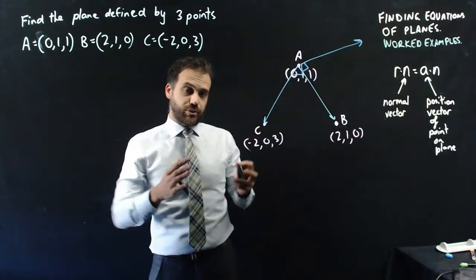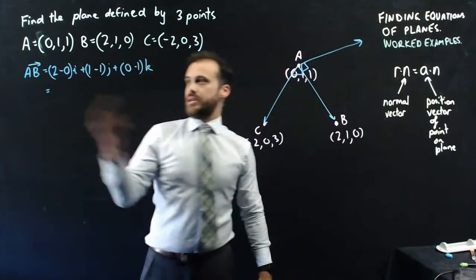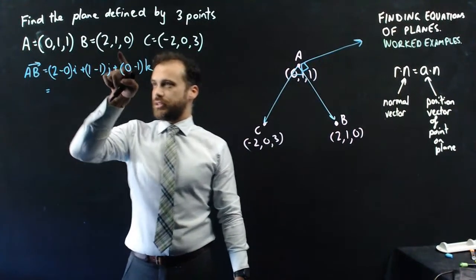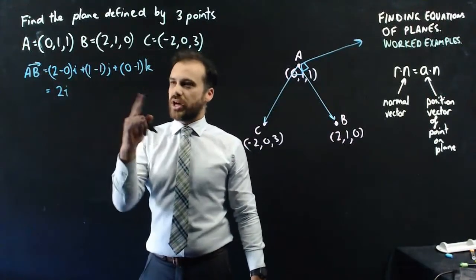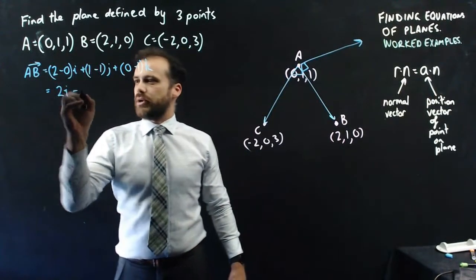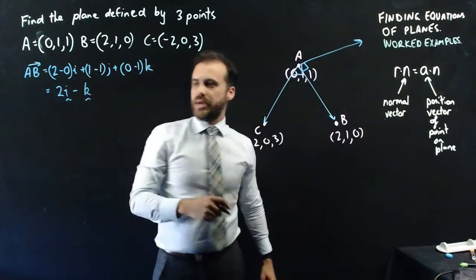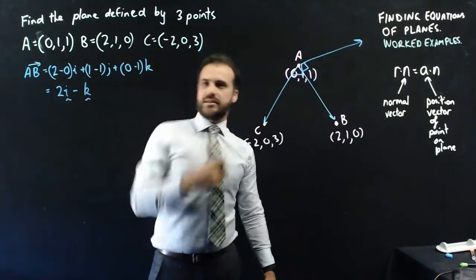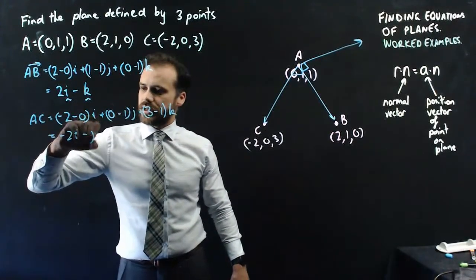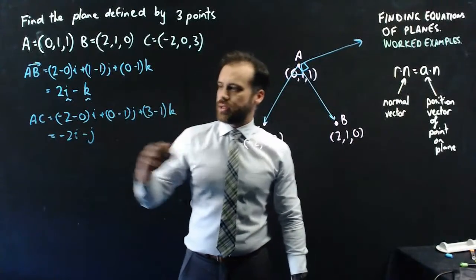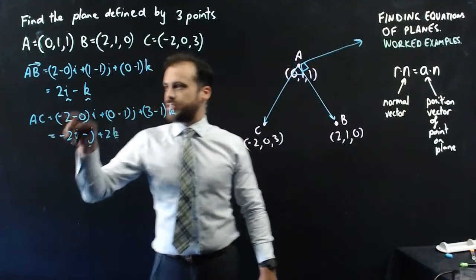So let's find the cross product. Finding vector AB: we subtract to get 2i + 0j - k. That's vector AB. What about vector AC? That gives -2i - j + 2k. And that is vector AC.